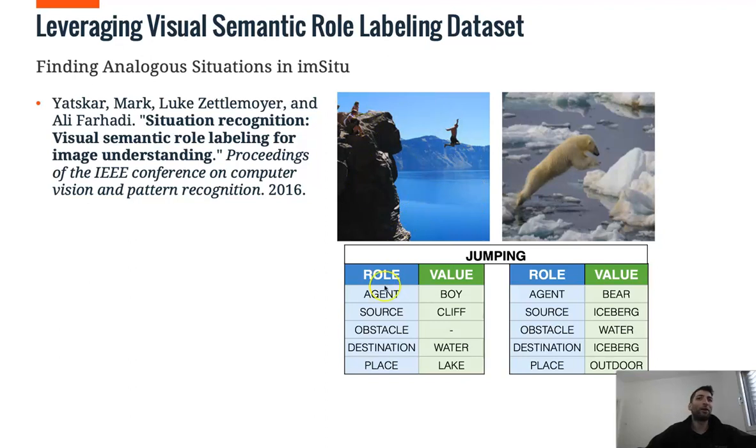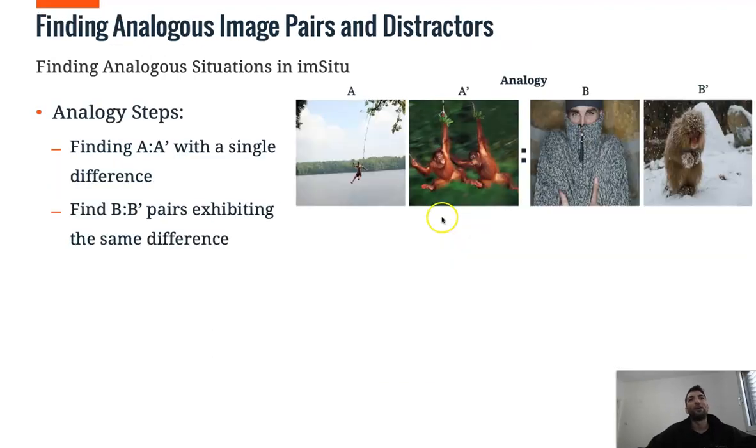For example, here we have an agent, which is a boy. He is jumping from a cliff to a destination, the water. So the main basic steps to create analogies is only to find A and A prime with a single difference, and then to find B and B prime pairs exhibiting the same difference.